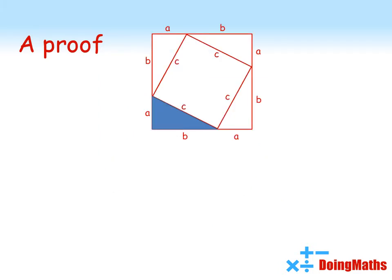Now we've got our labelled diagram, we can use a bit of algebra to prove Pythagoras' Theorem. Let's find the area of the large square. Each side of the square is a plus b, so the area must be a plus b all squared, which expands to get a squared plus b squared plus 2ab.